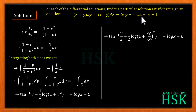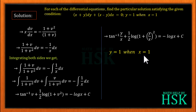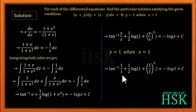Now we find the particular solution using the given condition: y = 1 when x = 1. Placing x = 1 and y = 1 in the general solution gives: tan⁻¹(1/1) + ½ log(1 + (1/1)²) = -log(1) + C.